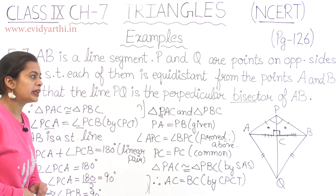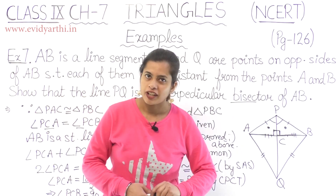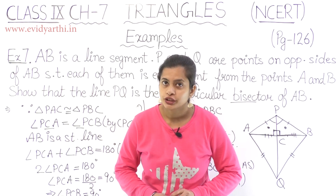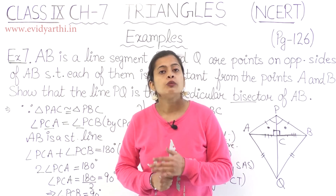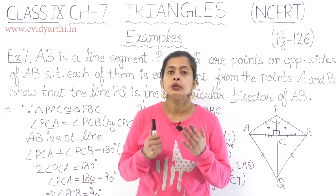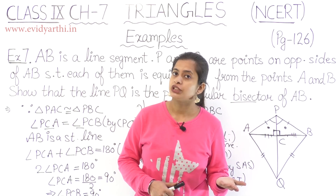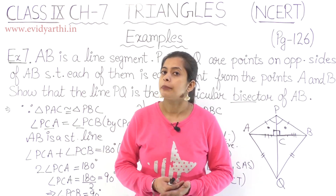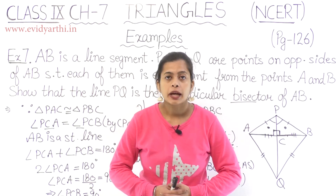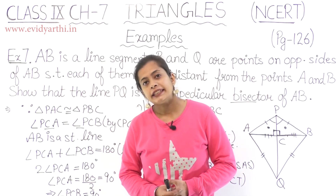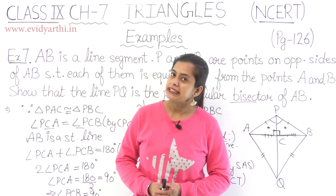Hence PQ is a perpendicular bisector — for the bisection part, we showed AC equals BC, and for the perpendicular part, we showed 90 degrees. Therefore PQ is the perpendicular bisector of line segment AB. I hope you understood this question. If you want to solve sample papers or see revision notes, visit our website and app.